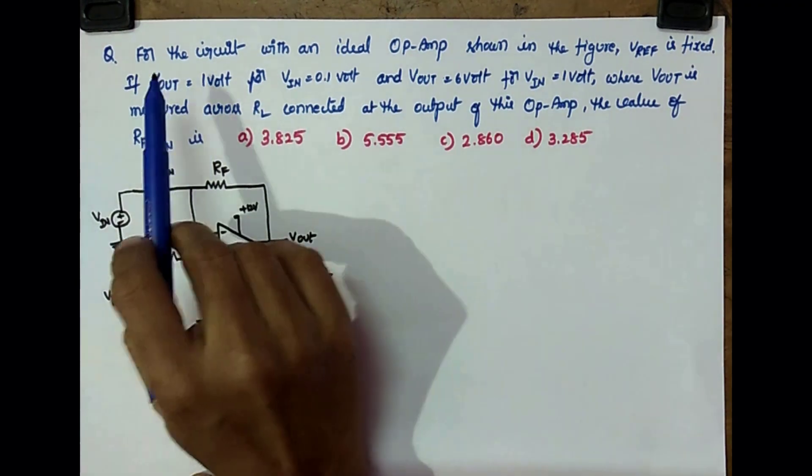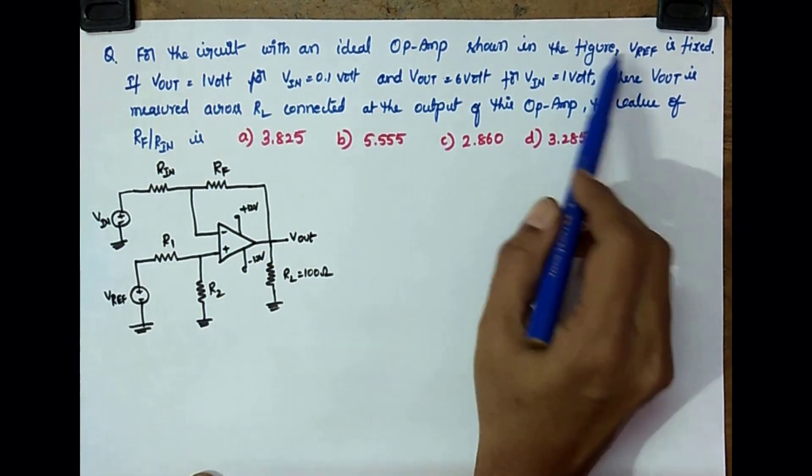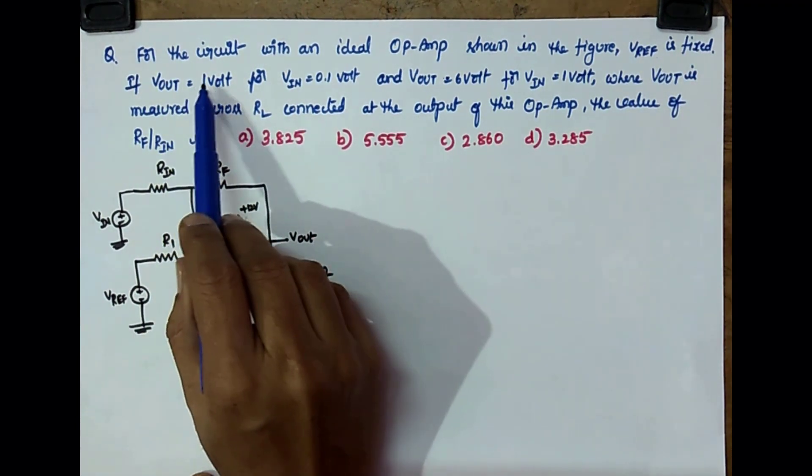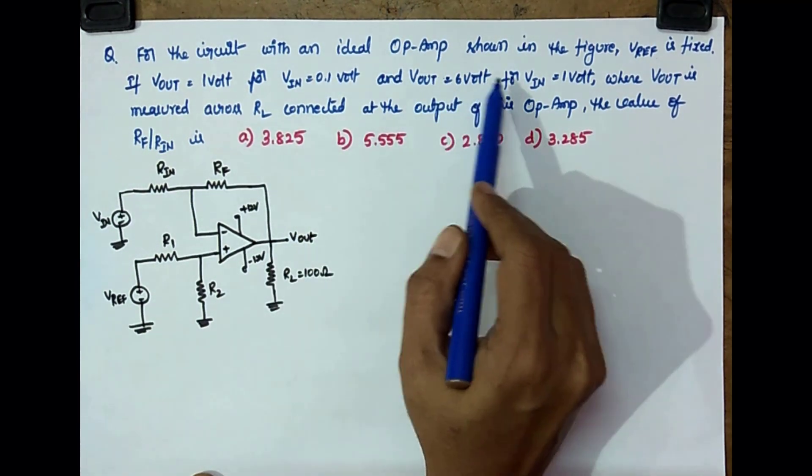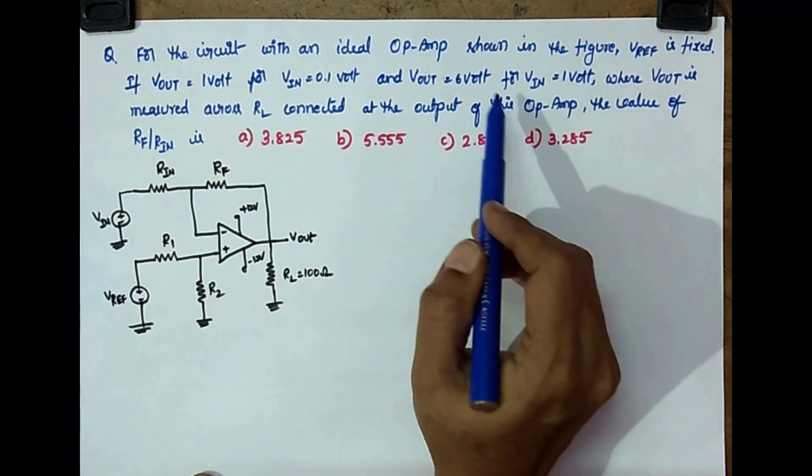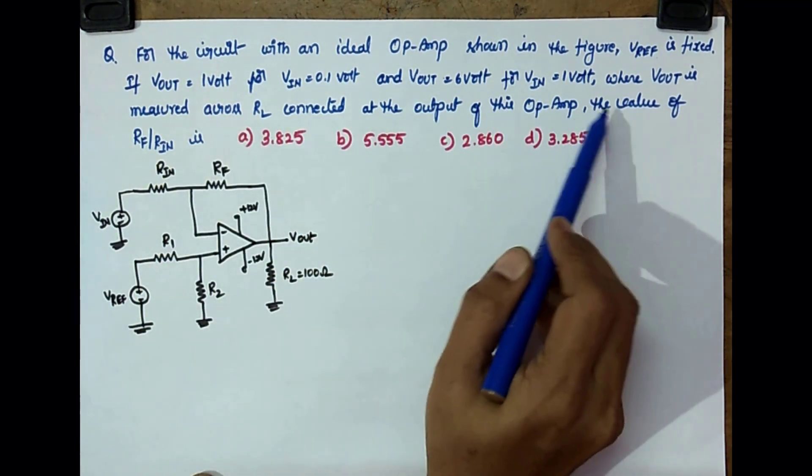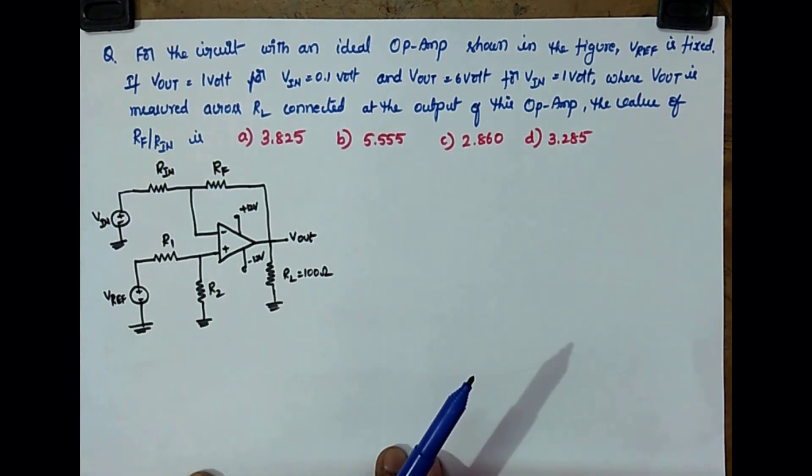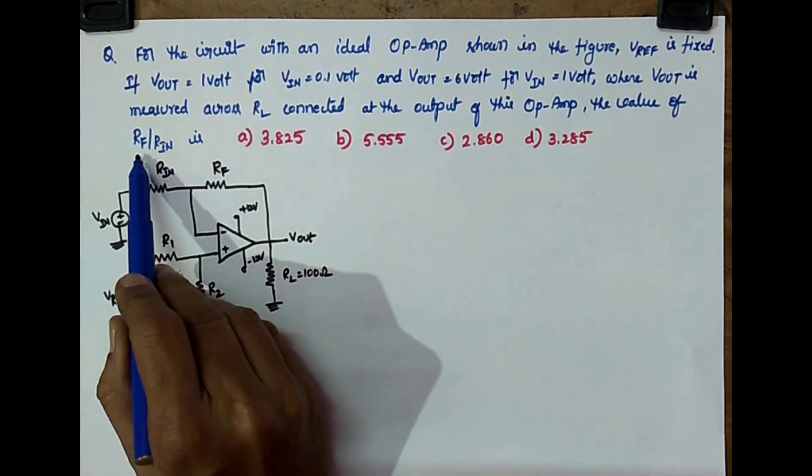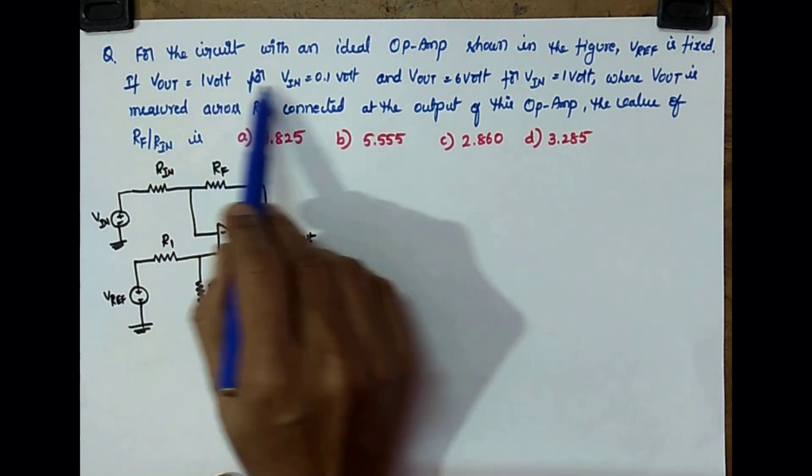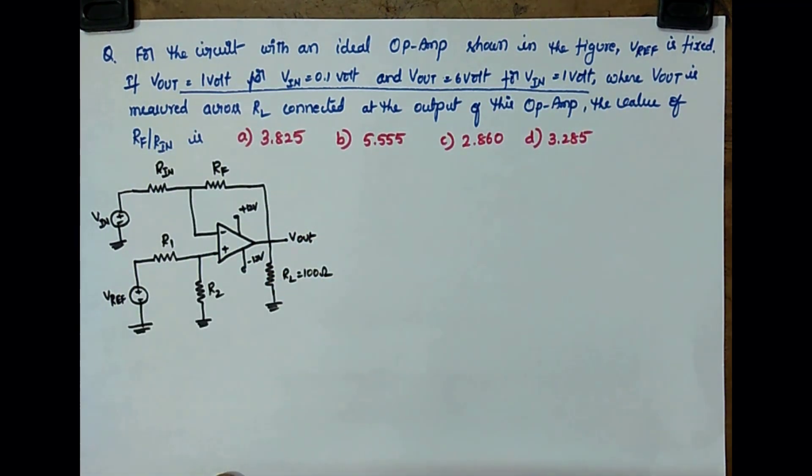Good day all of you. For this gate question, for the circuit with an ideal op-amp shown in the figure, V reference is fixed. If Vout equal to 1 volt for Vin equal to 0.1 volt and Vout equal to 6 volt for Vin equal to 1 volt, where Vout is measured across RL connected at the output of this op-amp, the value of Rf by Rn is - yes, you have to find the ratio Rf by Rn for these conditions.